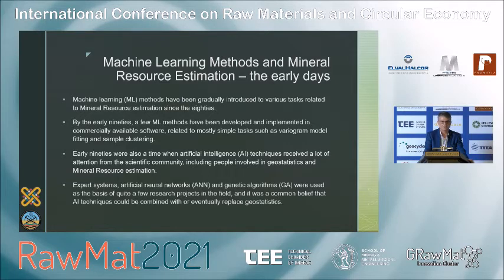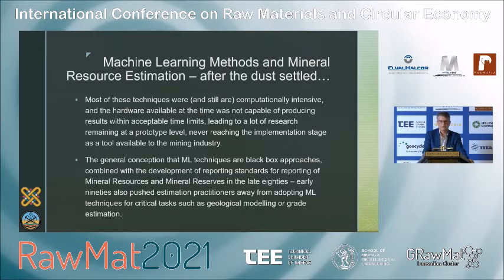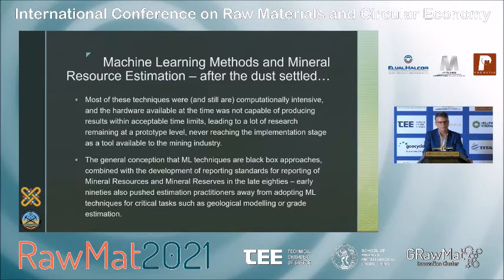Expert systems, artificial neural networks, and genetic algorithms were all used as the basis of quite a few research projects in the field. It was a common belief that AI techniques could be combined with or eventually even replace geostatistics. After a few years of research, most of these techniques — because they were and still are computationally intensive and the hardware at the time was not capable of producing results within acceptable time limits — led much of that research to remain at the prototype level, never reaching implementation as a commercially available tool. The general conception that machine learning techniques are black box approaches, combined with the development of reporting standards in the late 80s and early 90s, also pushed estimation practitioners away from adopting machine learning techniques for critical tasks such as geological modeling or grade estimation.